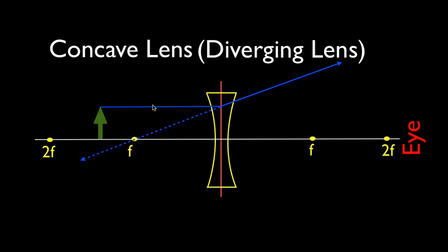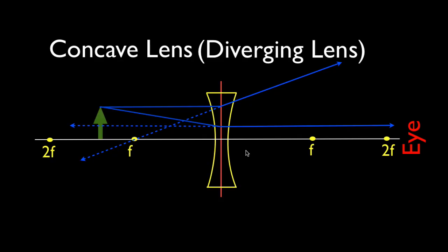This is called parallel F. It's a diverging lens, so it diverges so that it looks like the ray is coming from F on the same side as the object. The second ray is F parallel — we draw it entering the lens as if it was going to F on the other side, but when it comes out, it goes parallel. Your eye is on this side and it follows that ray backwards, tracing it back with your pencil and ruler. Those are the first two rays: parallel F and F parallel.